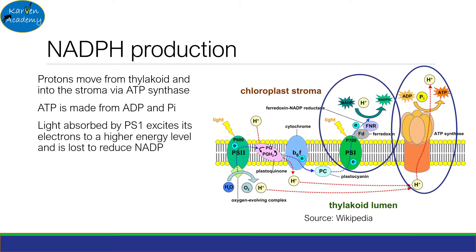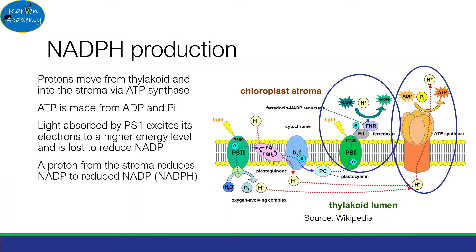Light is also absorbed by Photosystem 1, which ionizes it. The electron it loses is used to reduce NADP, and the electron lost by Photosystem 2 is used to reduce Photosystem 1. The proton that has moved into the stroma and the electron lost by Photosystem 1 are used to reduce NADP to form NADPH.